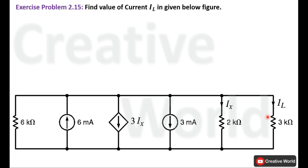So without wasting time, let's proceed towards the solution. In order to calculate the value of current IL through this branch, we will simplify this circuit. On this node, 6 mA current of the constant current source is entering while 3 mA current of the constant current source is leaving. So these two constant current sources can be merged together to form a single constant current source which will have the effective value of current toward this node.